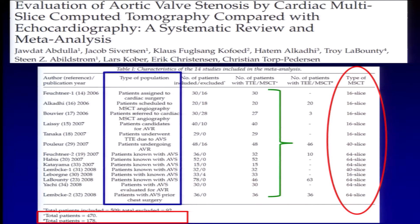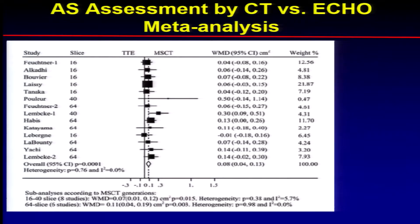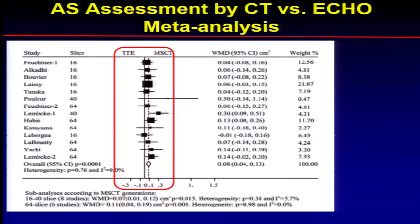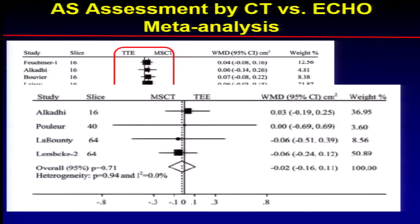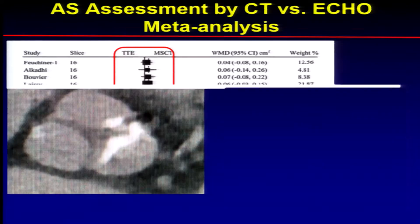In terms of the patient numbers, they were relatively small, and they used very diverse types of CT scanners — anywhere from 16 to 64 slice scanners. If you look at the results in this meta-analysis, you can see that CT underestimated valve stenosis minimally compared to transthoracic echocardiography, and actually overestimated stenosis minimally when compared to transesophageal echo.